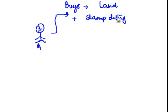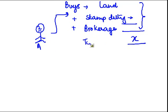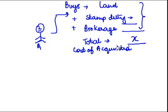Stamp duty is a levy on the purchase and sale of immovable property. There may also be brokers who arrange a piece of land for you, so you might pay some brokerage charges. Once you pay all these amounts — let's say the total is X — this is known as the cost of acquisition: the various costs paid to acquire this capital asset.